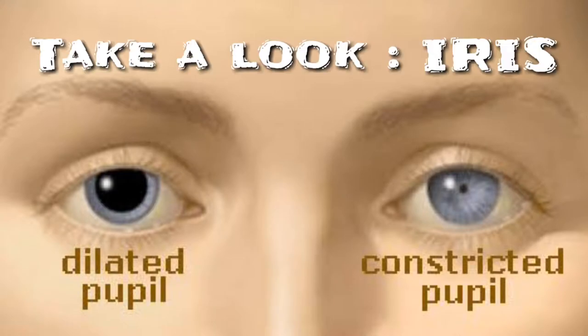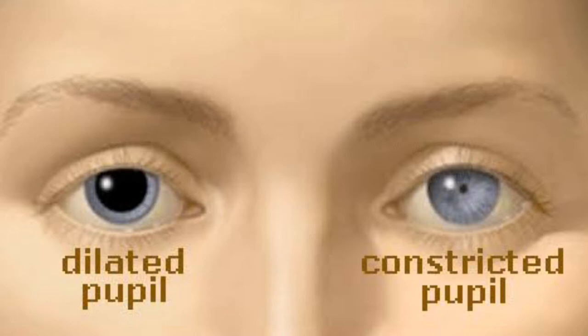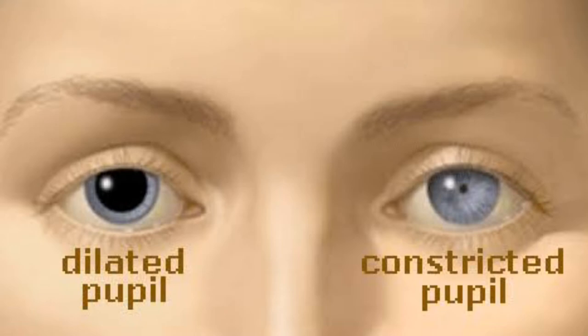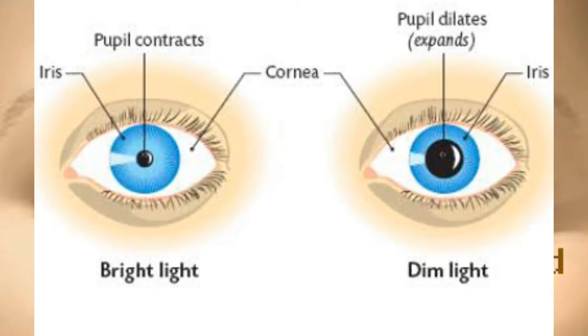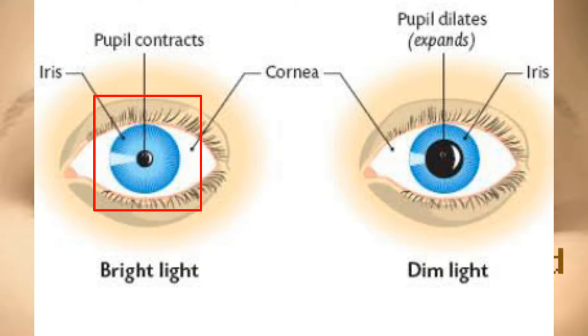Your eye will react differently depending on how bright the light shining into it is, controlled by the iris, a ring of muscle. Iris and pupil: the colored part of your eye, called the iris, has a hole in the middle called the pupil. In bright light, the pupil shrinks to prevent too much light getting into your eye. In dim light, the pupil expands to allow more light into your eye.